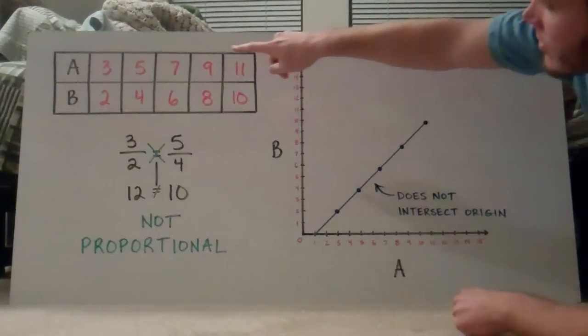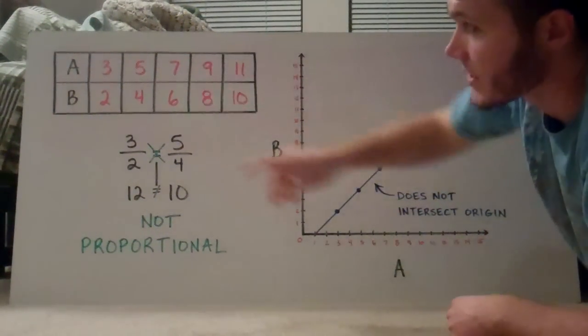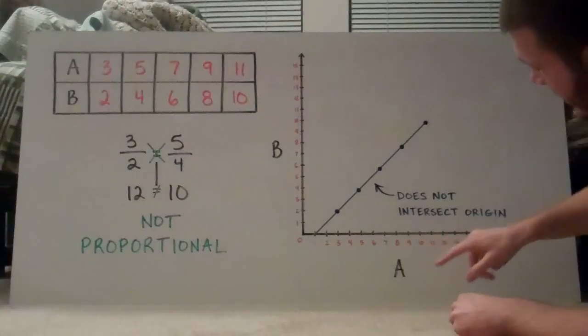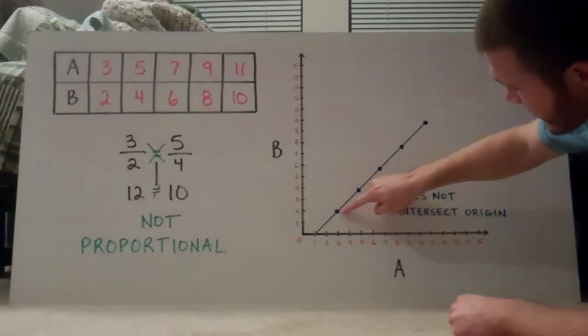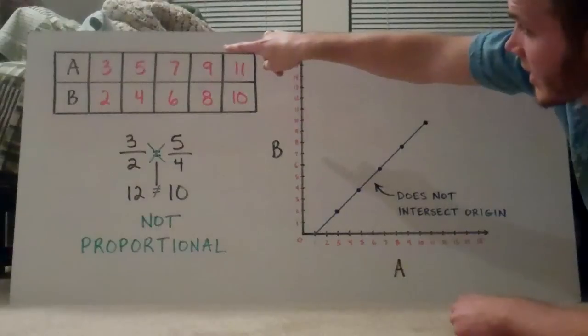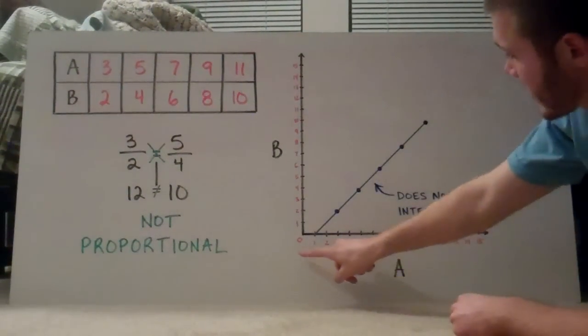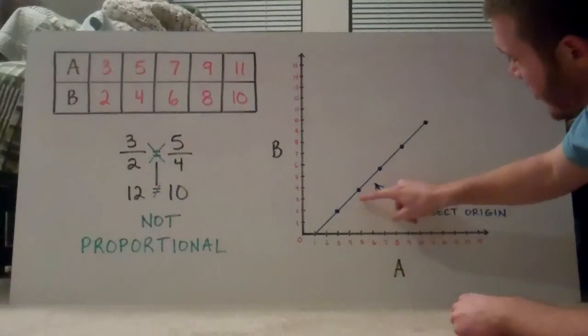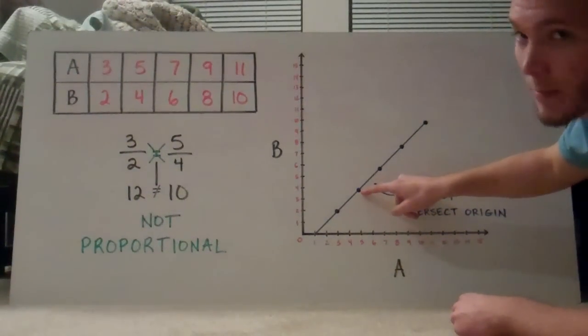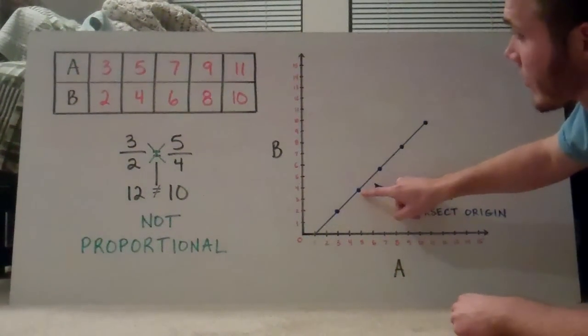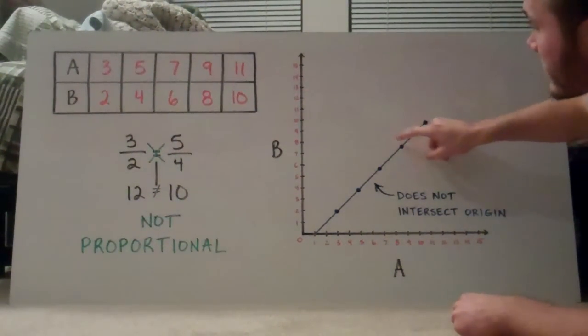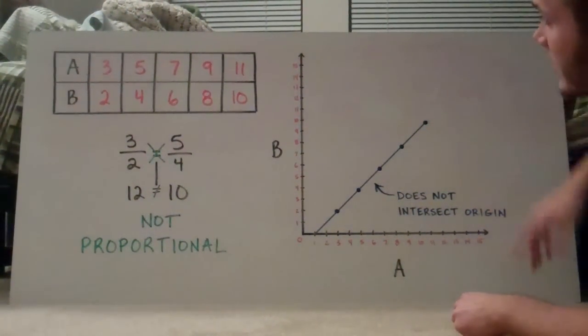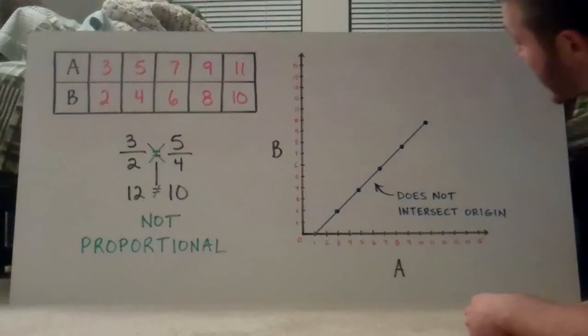I'm going to graph these points. So a is 3, b is 2, there's my point. A is 5, b is 4, there's my next coordinate. And I keep going, 7, 6, 9, 8, 11, 10. And they should form a straight line.